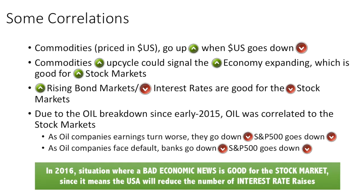Here are some correlations we often see in the markets that will impact forex trading. Commodities are priced in US dollars and tend to go up when the US dollar goes down. For example, oil goes up and the US dollar goes down; gold goes up and the US dollar goes down. When oil goes up and the US dollar goes down, you can short the USD/CAD pair — you buy up the loonie.